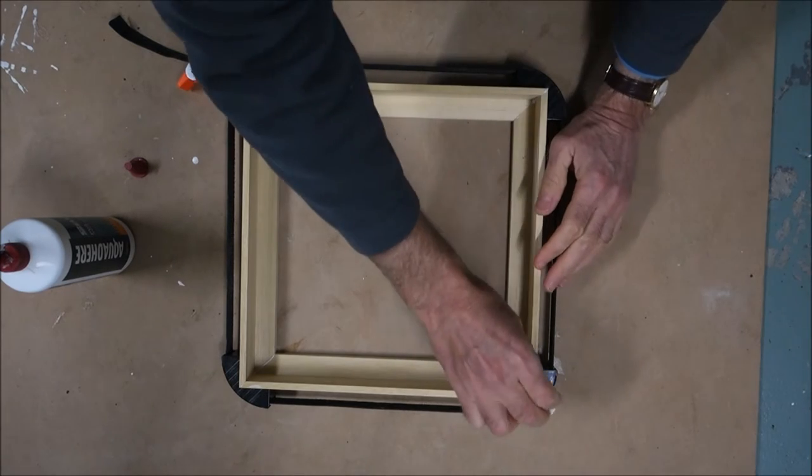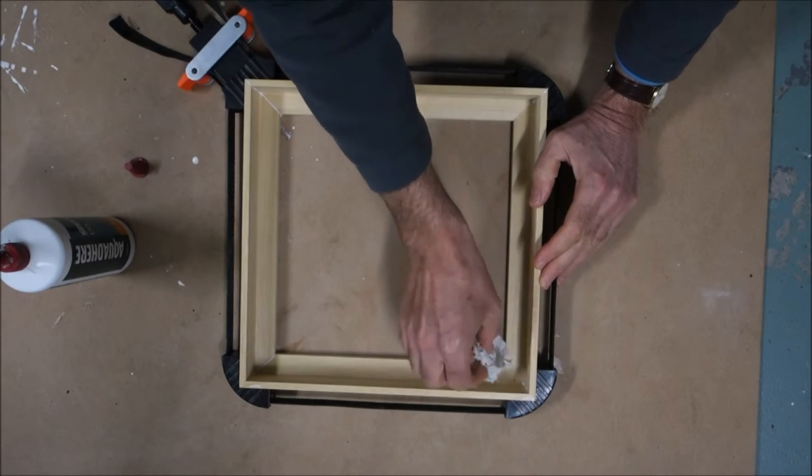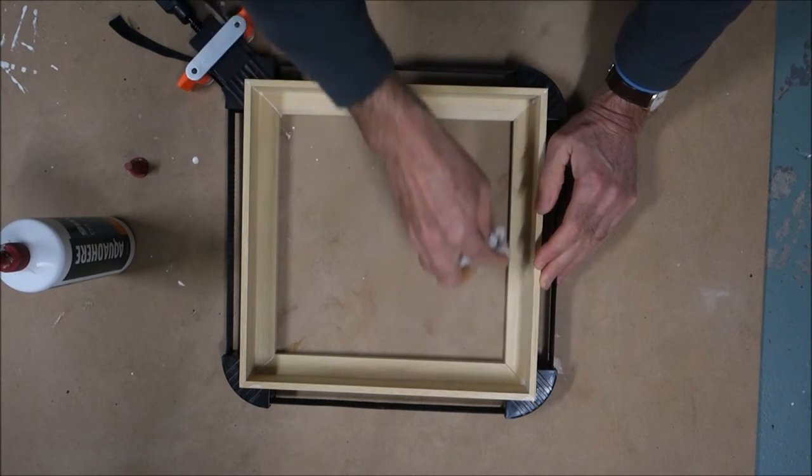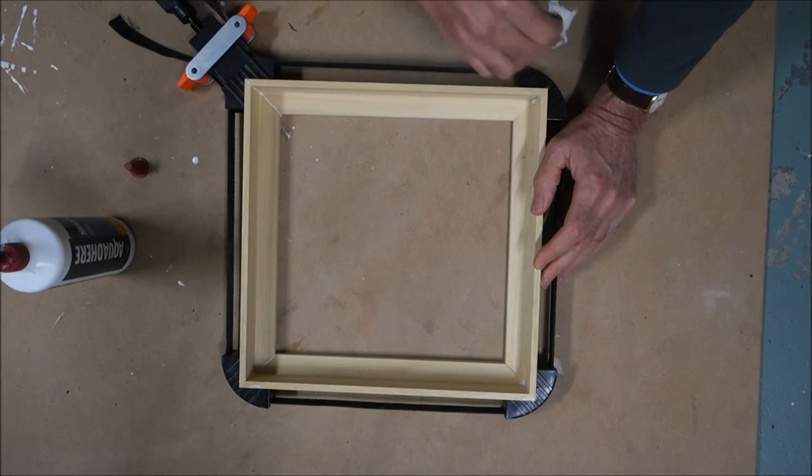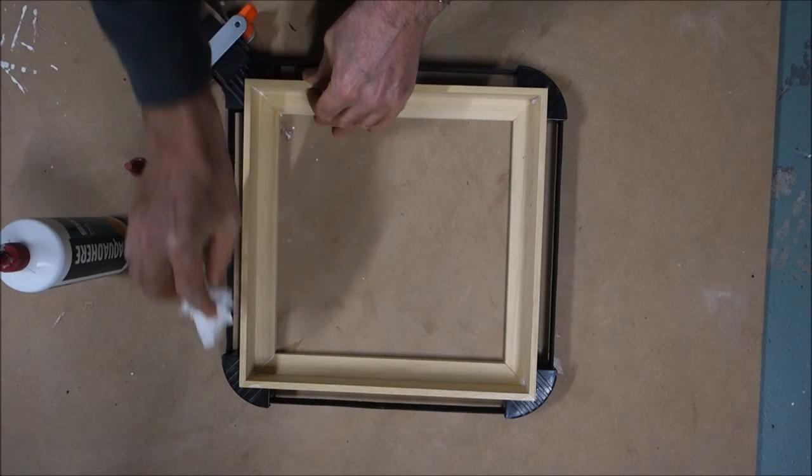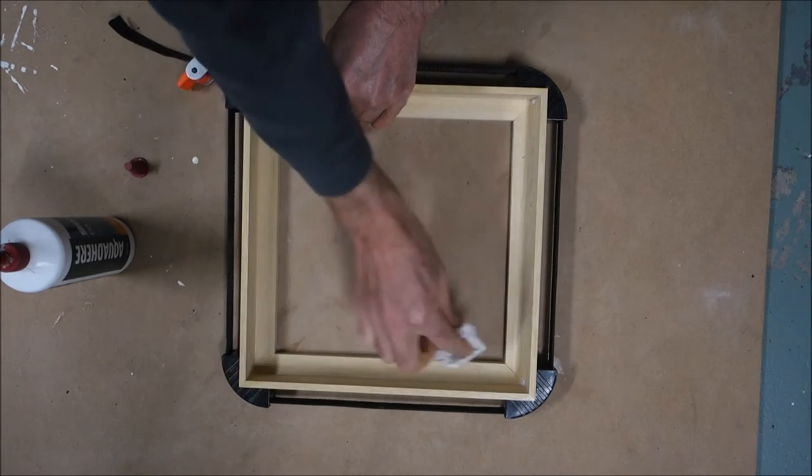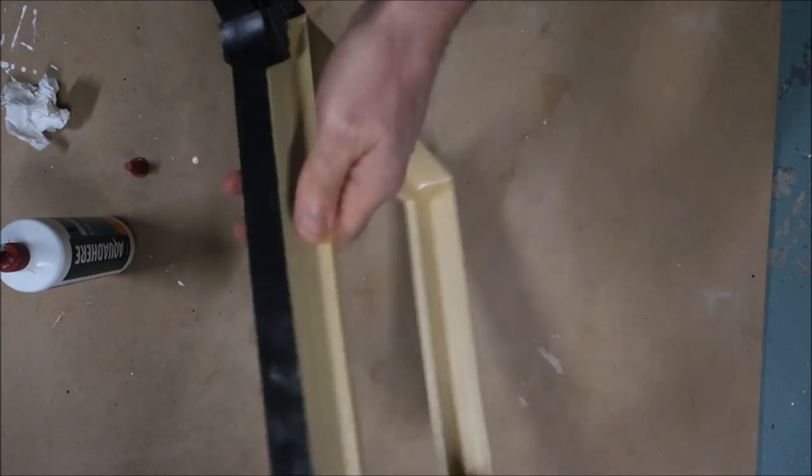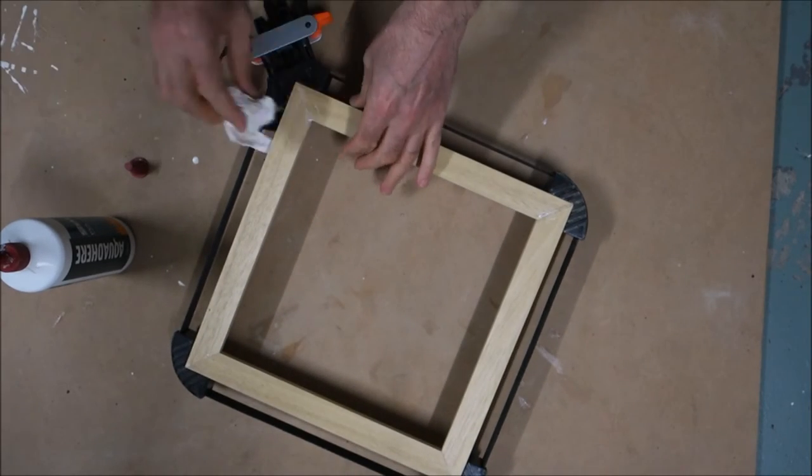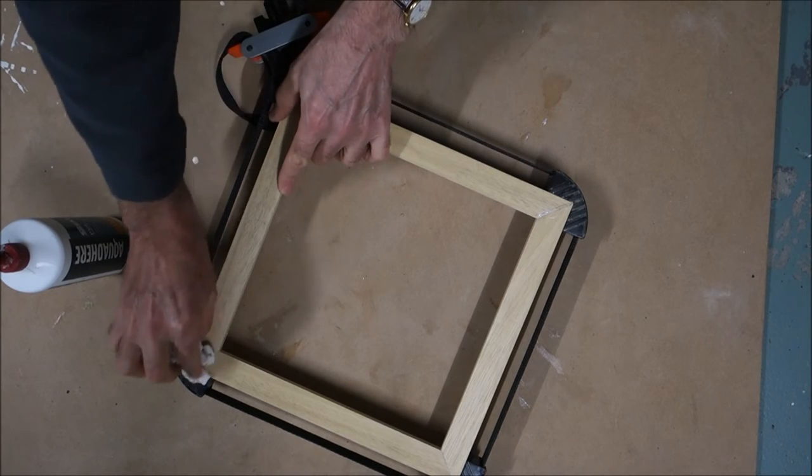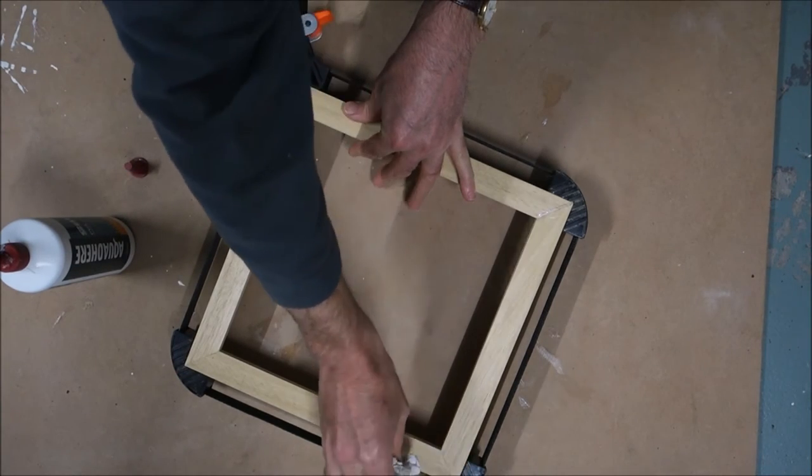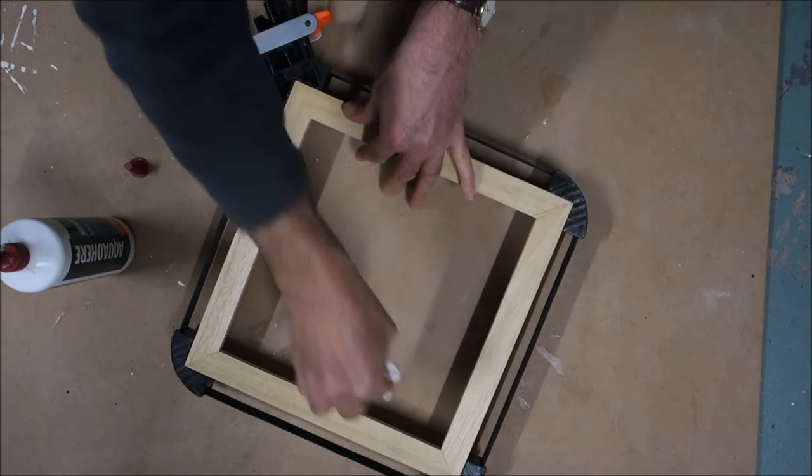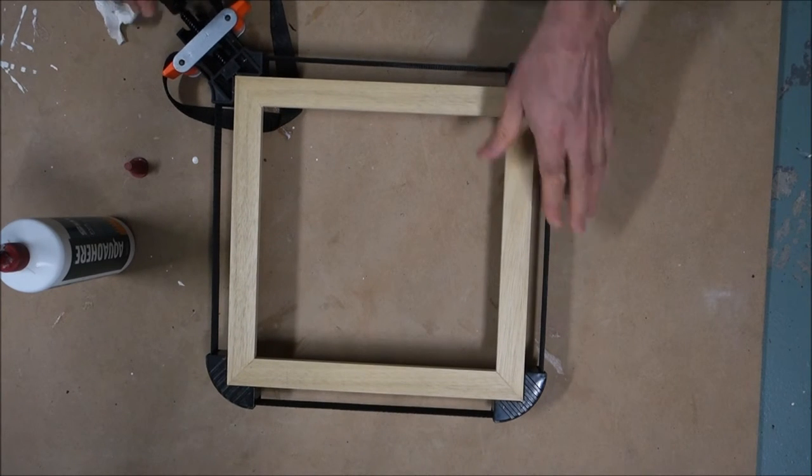And then finally just to remove some of the excess, probably best to do that with a damp cloth and dry tissue. There will be some tidying up to do on the outside of the frame but the frame is going to be painted anyway. Just gently turn that over and also make sure that the excess glue is removed. So we can leave that now for a couple of hours.